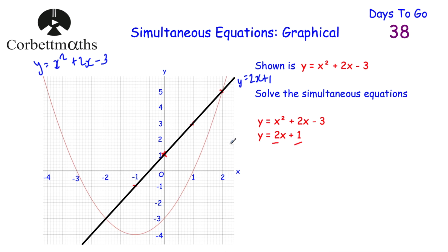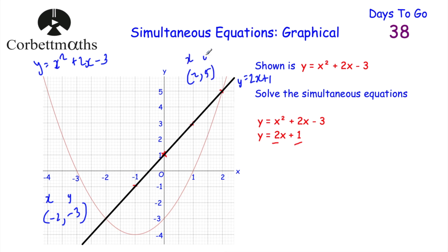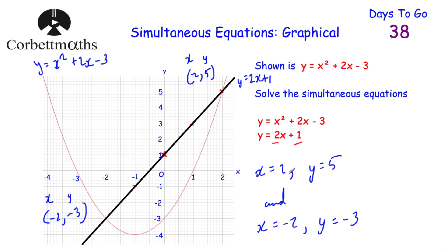To solve the simultaneous equations, we find where the quadratic y equals x squared plus 2x minus 3 and the straight line y equals 2x plus 1 intersect. There are two intersection points. The first is the point (negative 2, negative 3), so x equals negative 2 and y equals negative 3. The second is the point (2, 5), so x equals 2 and y equals 5. So our two solutions are: x equals negative 2, y equals negative 3, and x equals 2, y equals 5.